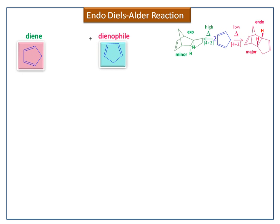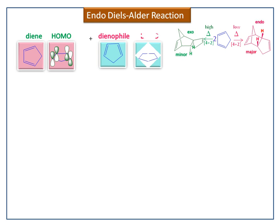This is the HOMO of cyclopentadiene — it should have one node. This is the LUMO of cyclopentadiene — it should have two nodes.